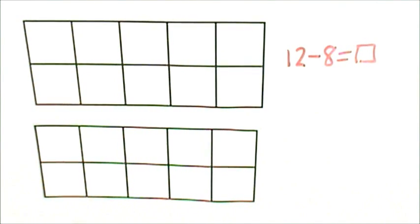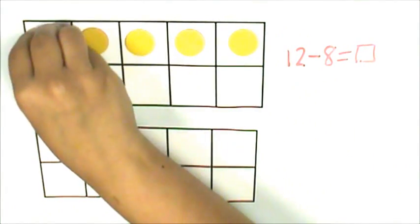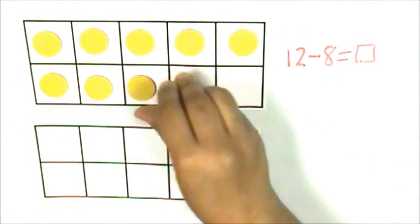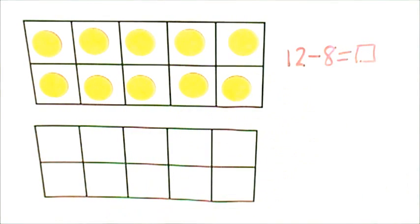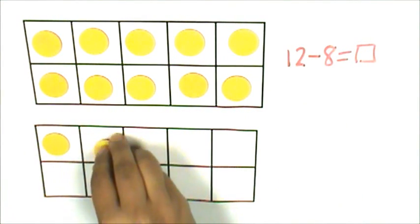First, I will represent 12 on a double 10-frame. When a 10-frame is full, that's 10, so I will build this 10-frame up and then 11, 12.